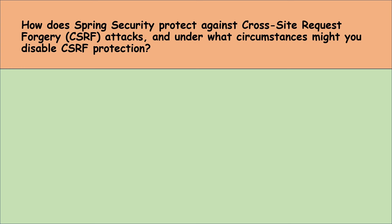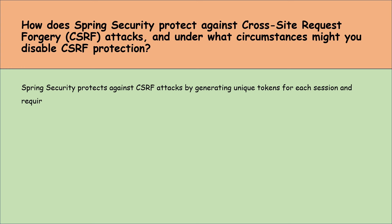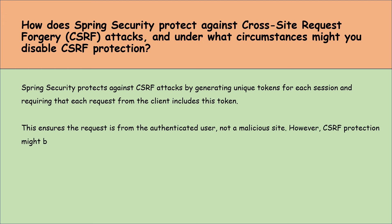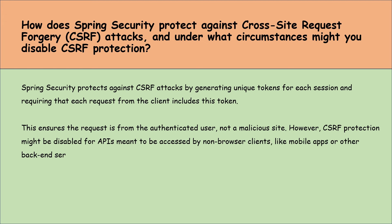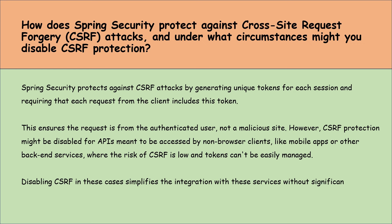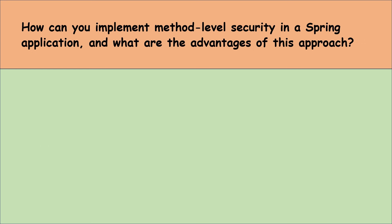How does Spring Security protect against cross-site request forgery (CSRF) attacks, and under what circumstances might you disable CSRF protection? Spring Security protects against CSRF by generating a unique token for each session and requiring that each request from the client includes this token, ensuring the request is from the authenticated user and not a malicious site. However, CSRF protection might be disabled for APIs meant to be accessed by non-browser clients like mobile apps or backend services, where the risk of CSRF is low and tokens cannot be easily managed.